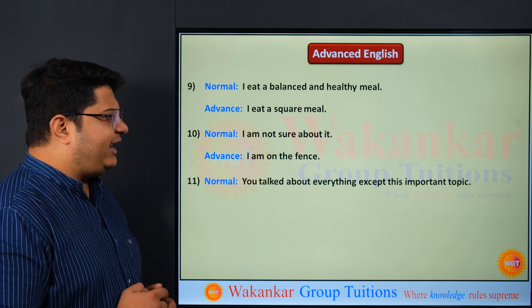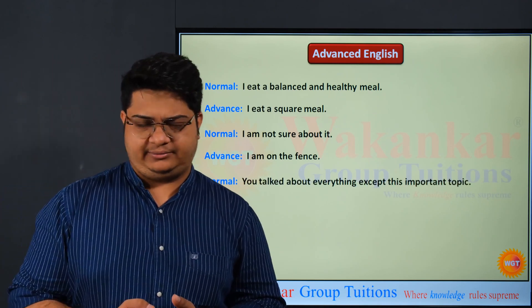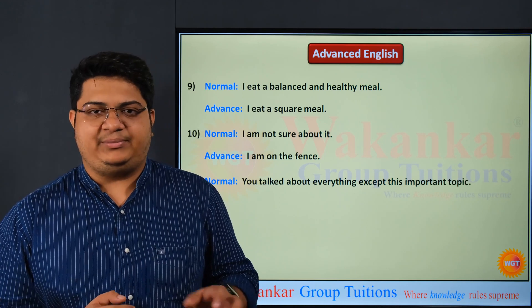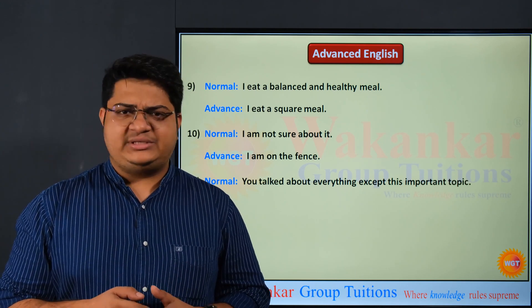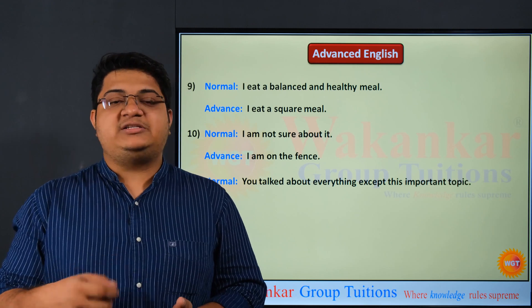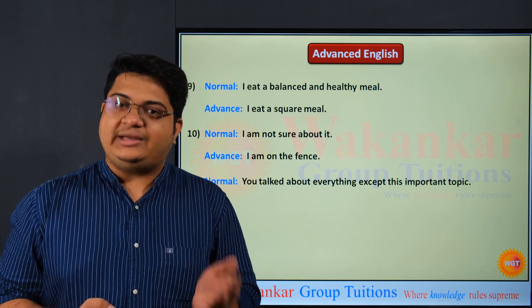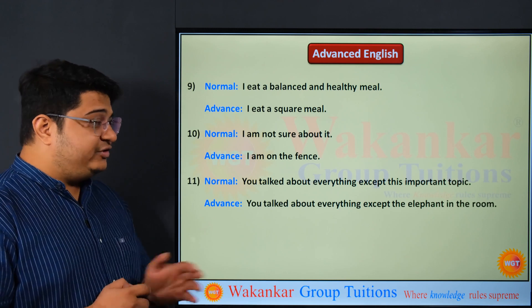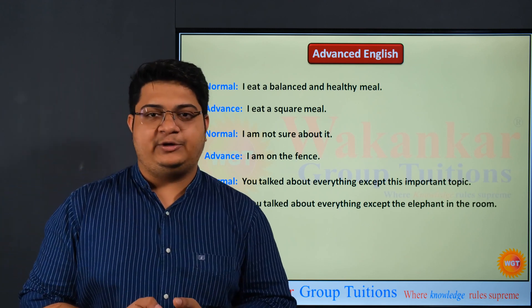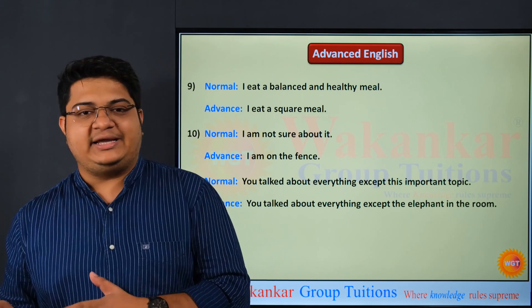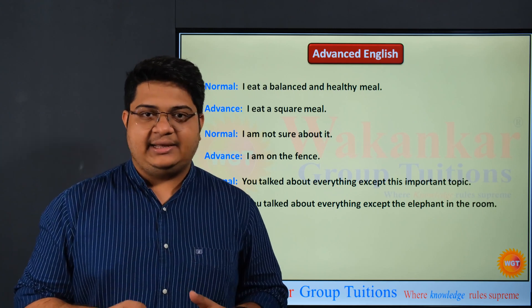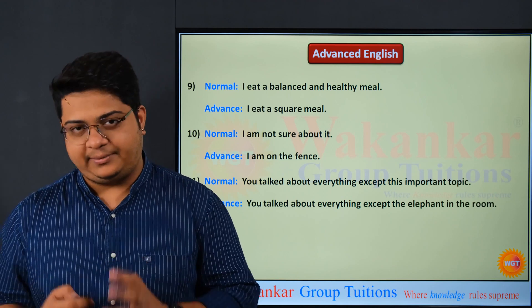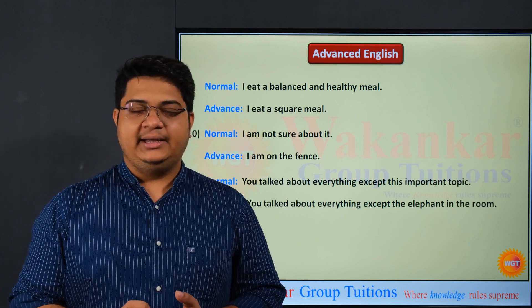Next: 'You talked about everything except this important topic.' Many times we lose track of something important and speak about everything else. Instead of saying that, we can say 'you talked about everything except the elephant in the room.' This means we spoke about everything else but did not focus on the important one.